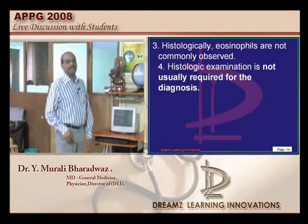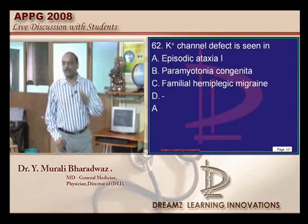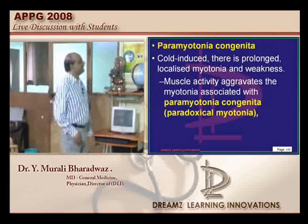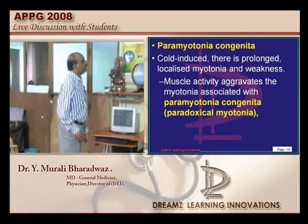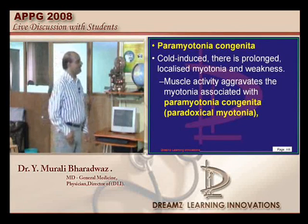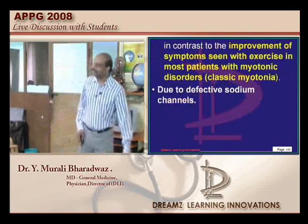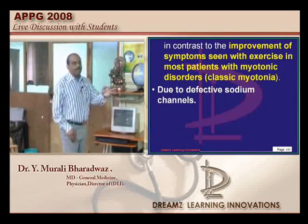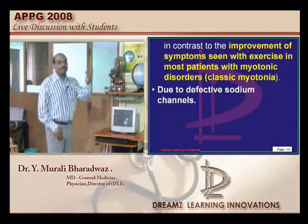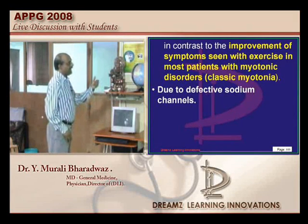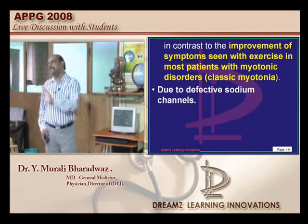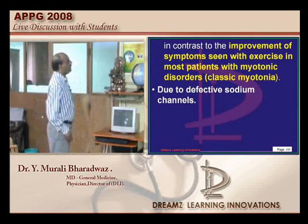What is a potassium channelopathy? Paramyotonia congenita presents with prolonged localised myotonia and weakness — it is an example of a sodium channelopathy. How do you differentiate classical myotonia from paramyotonia? In paramyotonia, muscle activity aggravates the myotonia; in true congenital myotonia, activity typically decreases it — that is the differentiating factor.